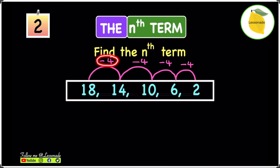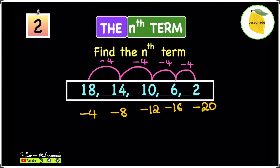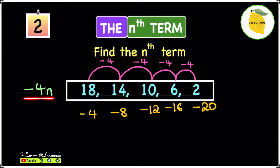Because we're subtracting 4, we write the minus 4 times table directly underneath the linear sequence: minus 4, minus 8, minus 12, minus 16, and minus 20. The next thing is to write minus 4n. If we were taking away 3 each time we'd write minus 3n, or if we were adding 4 each time we'd write 4n — but because it's minus 4, we write minus 4n.